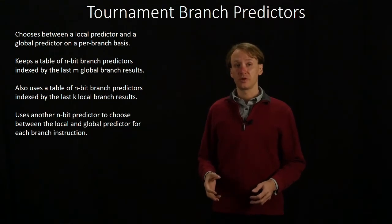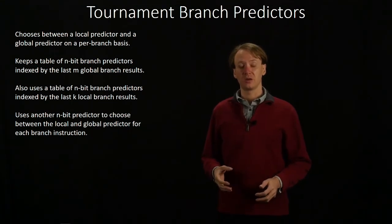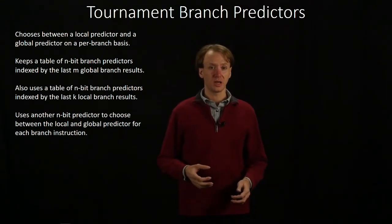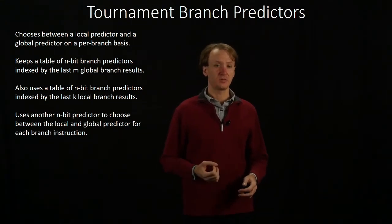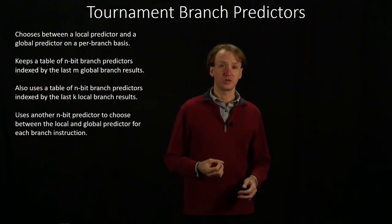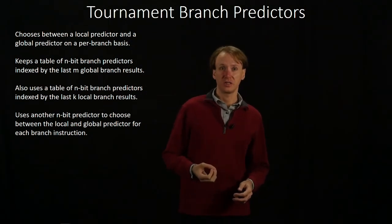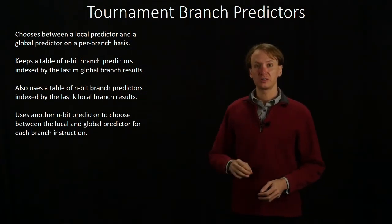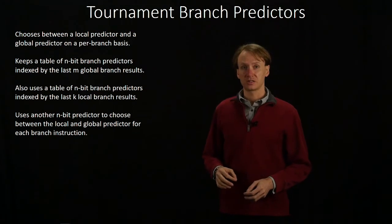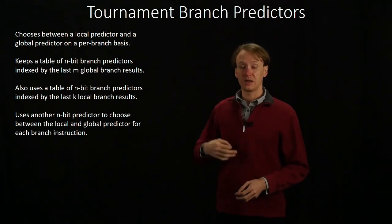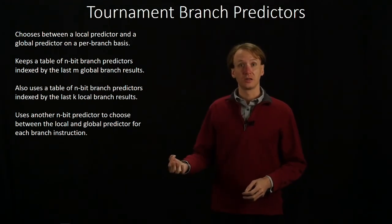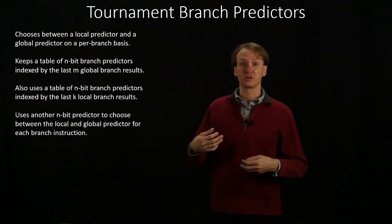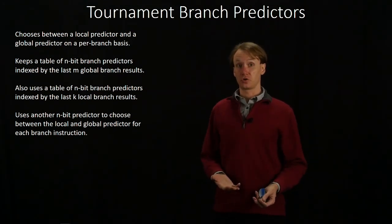This method works a little bit better than the MN branch predictors. This time, we can get up to 97% branch prediction accuracy, but we've still got some room to improve. Next time, we'll be looking at another method that we can use to improve our prediction even further.